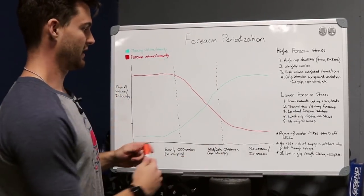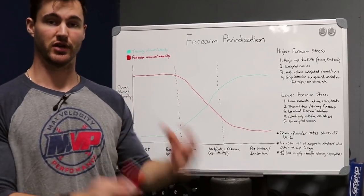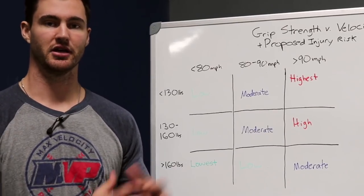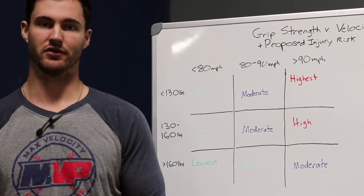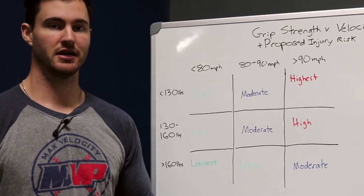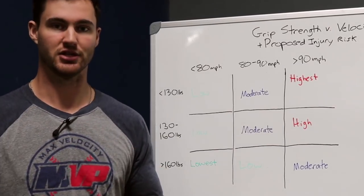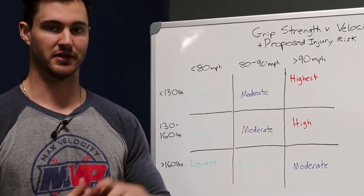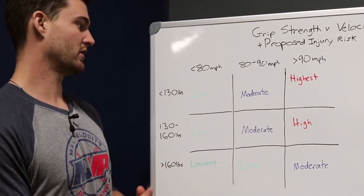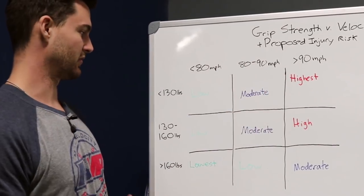So overall point here, there needs to be an inverse relationship between your training stress and your throwing stress, depending on where you're at in your off-season. I want to make a quick point about grip strength versus velocity versus what I would consider my hypothetical or proposed injury risk. This is more anecdotal than anything, but again, we do see that there's a relationship here. This is kind of how I envision this matrix. So we have less than 80 miles an hour, 80 to 90 miles an hour, greater than 90 miles an hour, just trying to keep it simple.